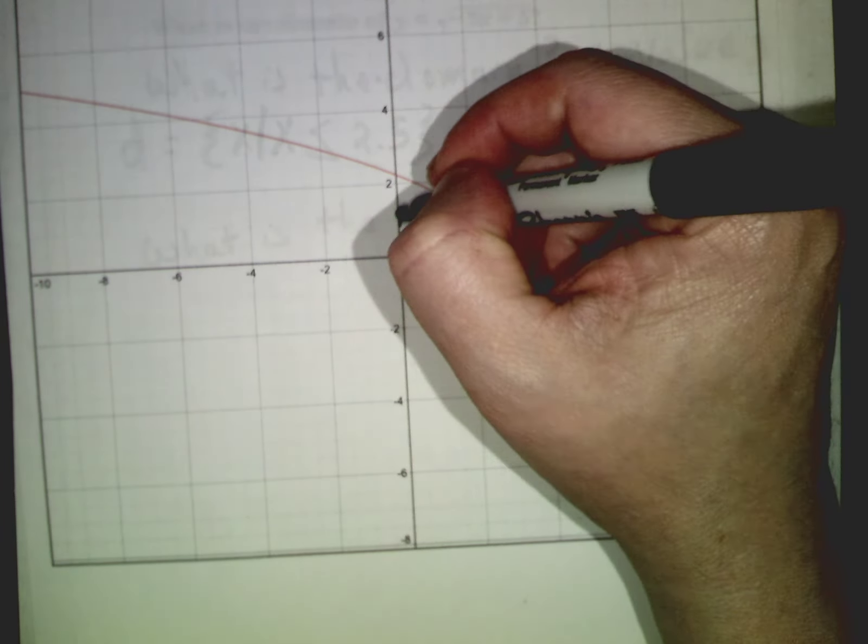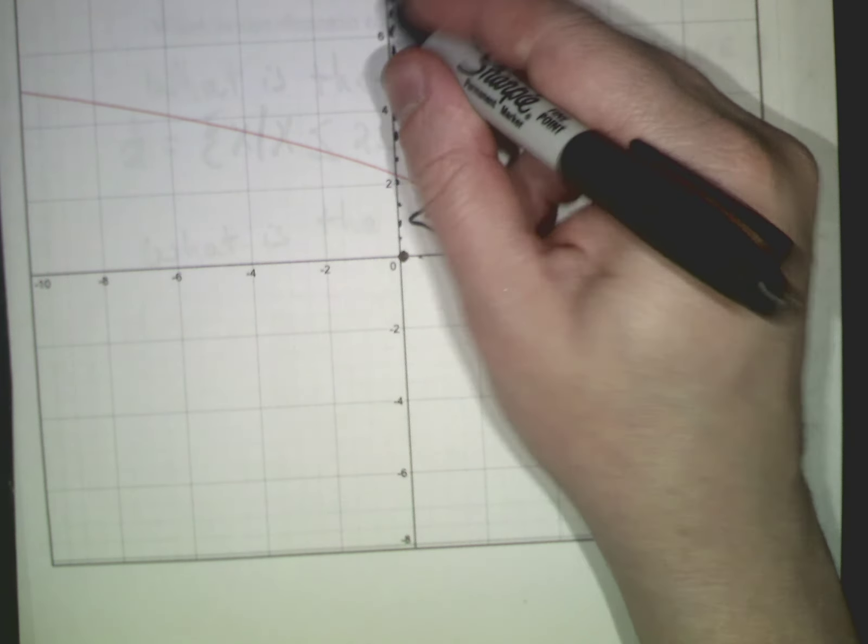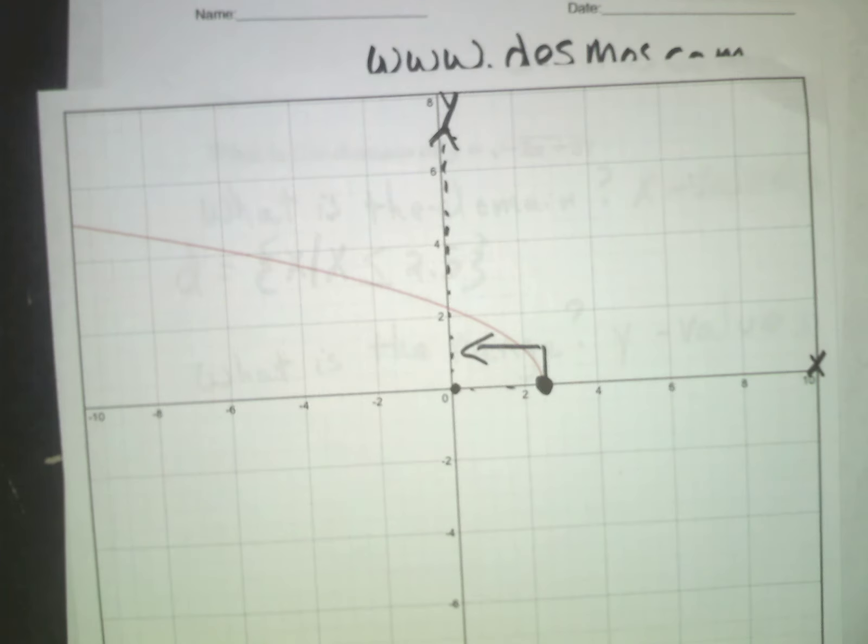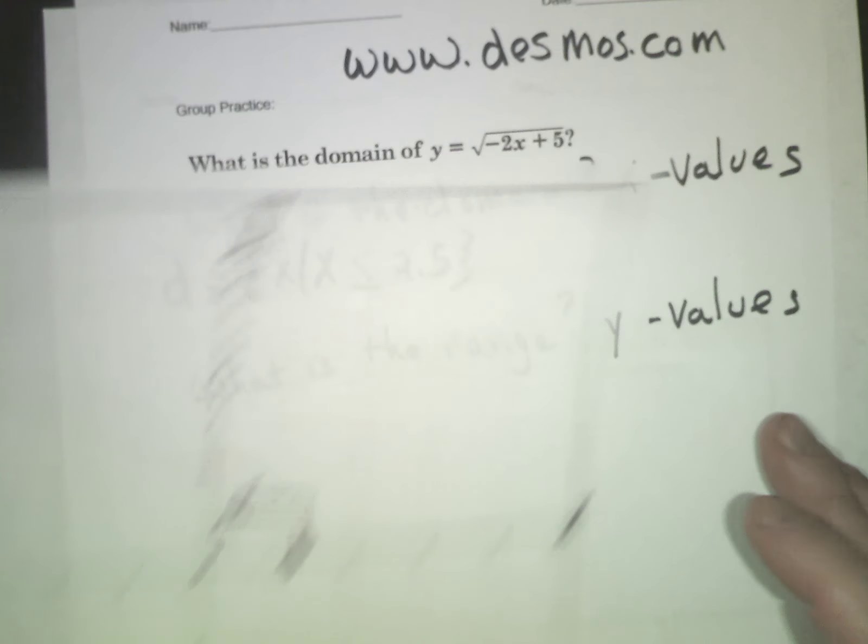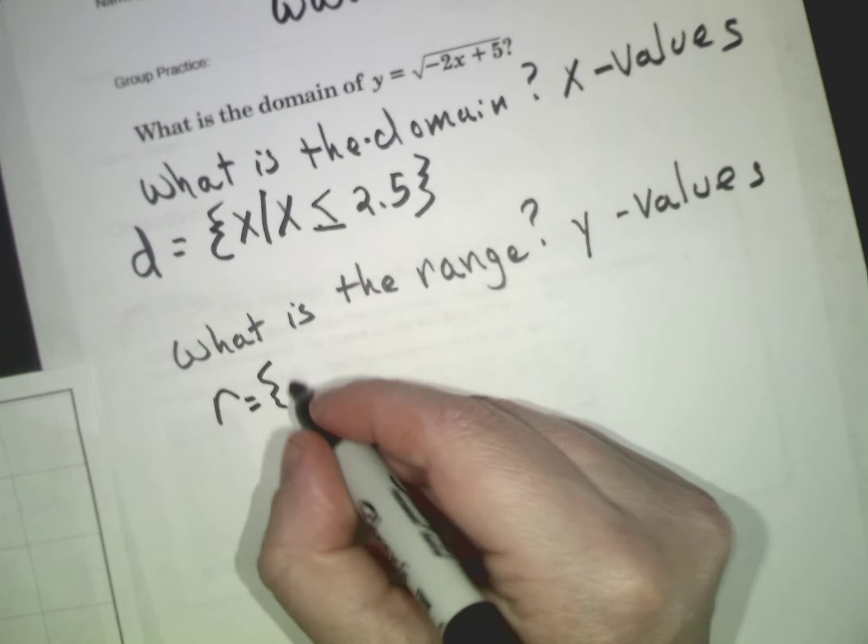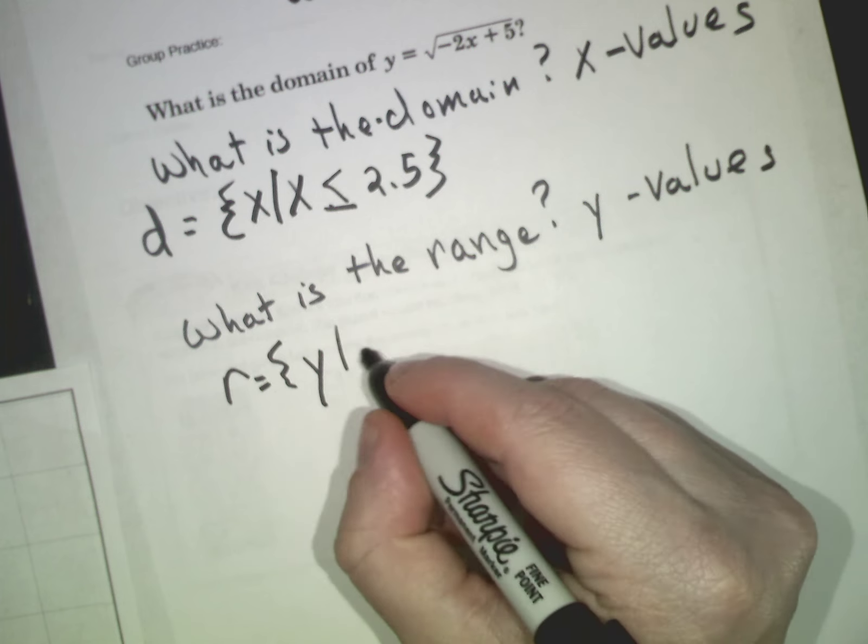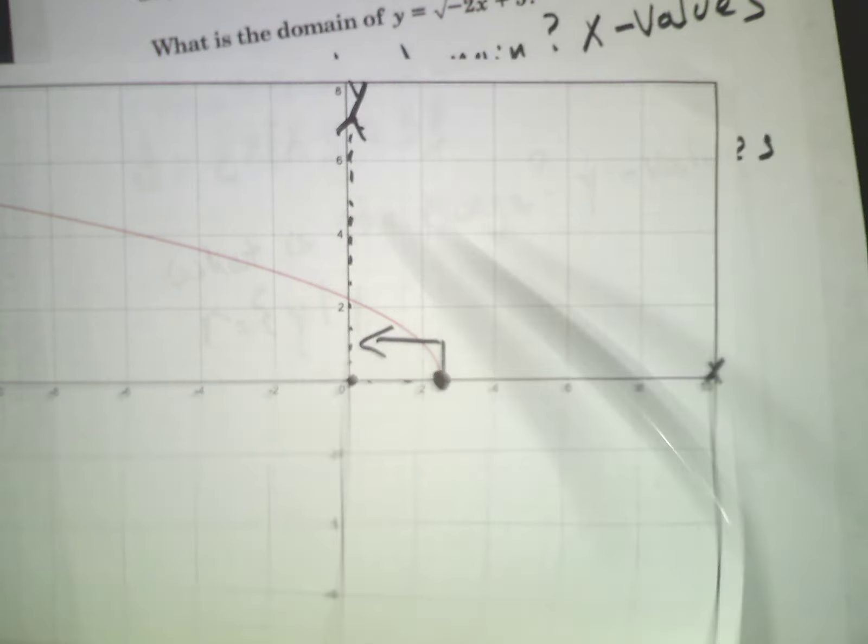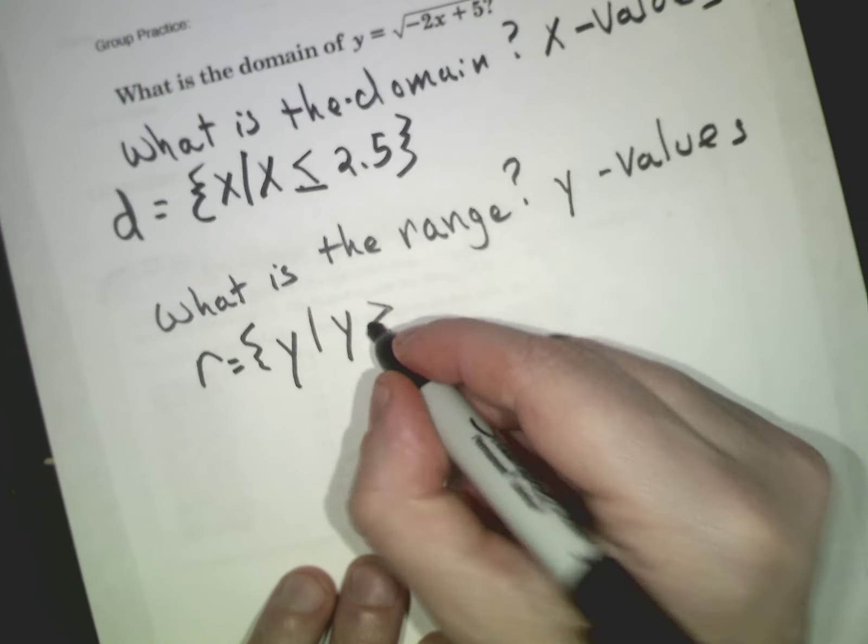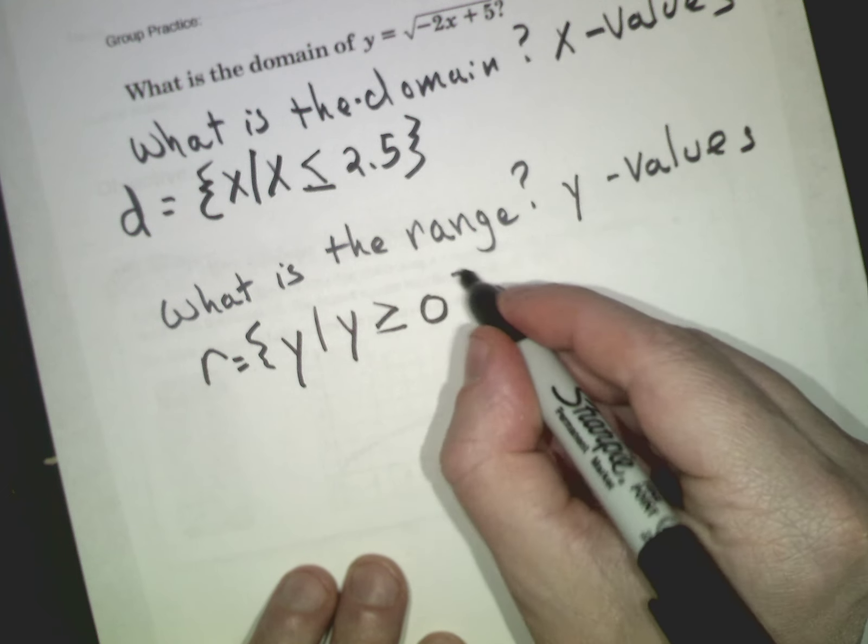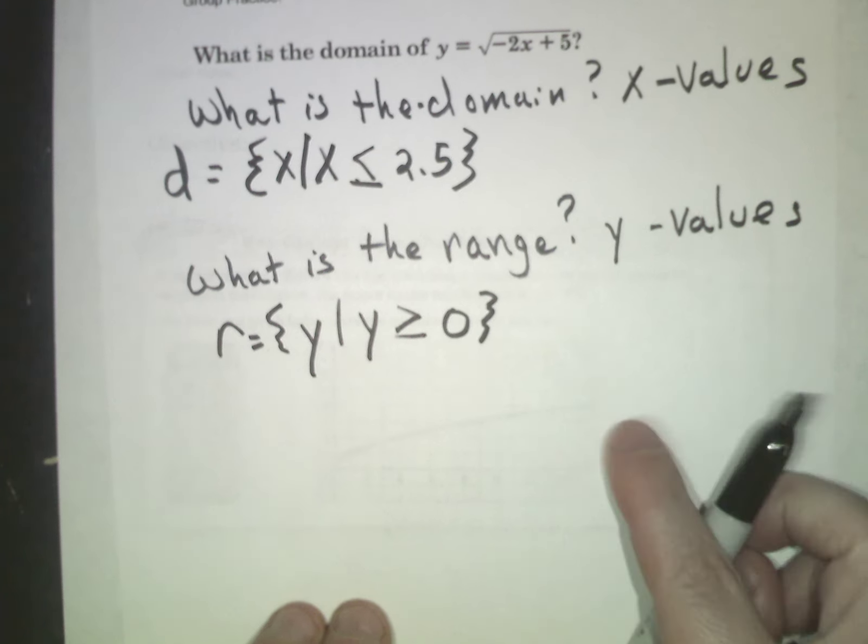If I look at this graph I'll realize that it keeps going up the y scale forever. It never stops. So our range is the value y - it is all numbers that are greater than zero. Y is greater than or equal to zero. Very simple idea.